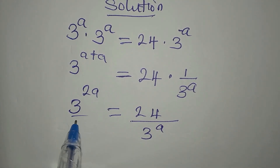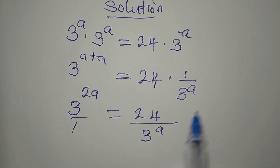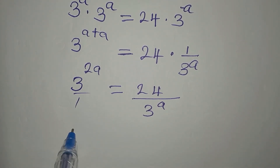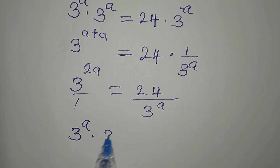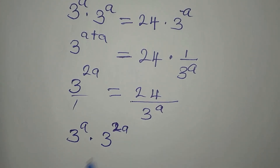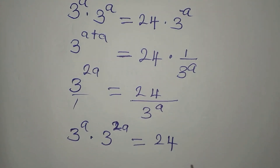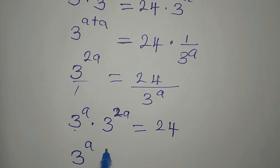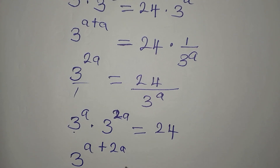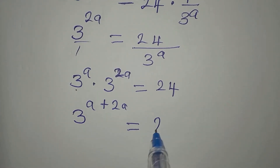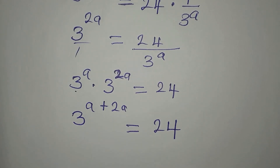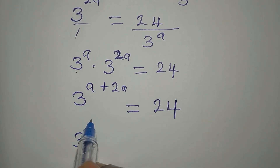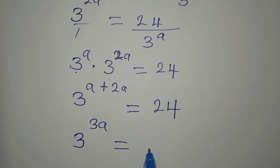Now this is over 1, so we can cross multiply. Then we have 3 to the power of a multiplying 3 to the power of 2a, and that will be equal to 24. Now we have the same base again, so we can pick one of them. Then we have 3 to the power of a plus 2a, which is going to equal 24. Adding the left hand side, we have 3 to the power of 3a equals 24.